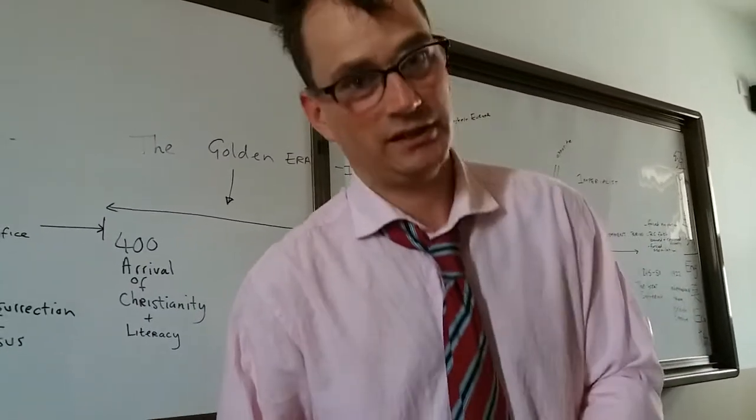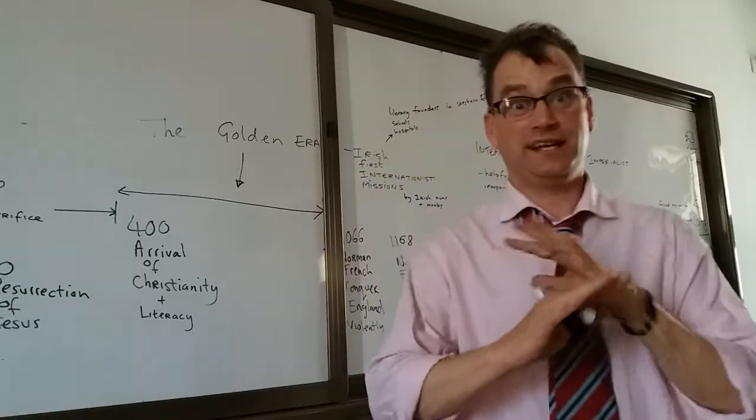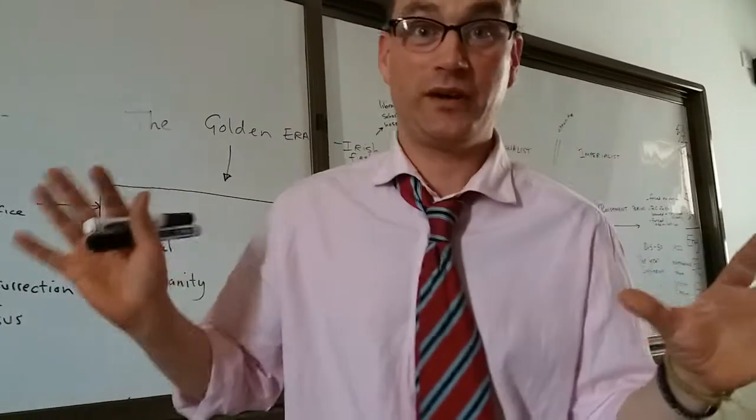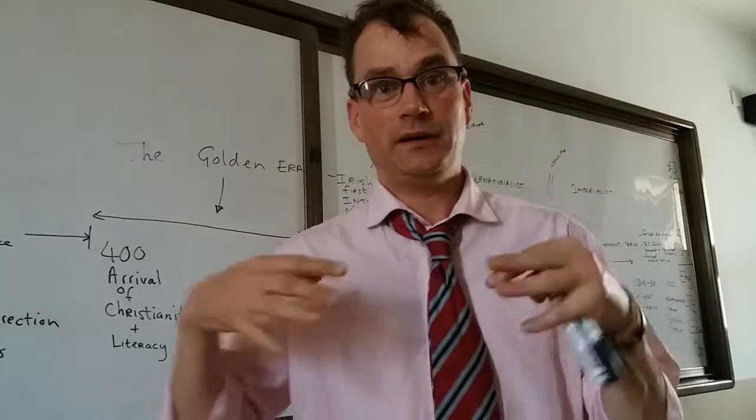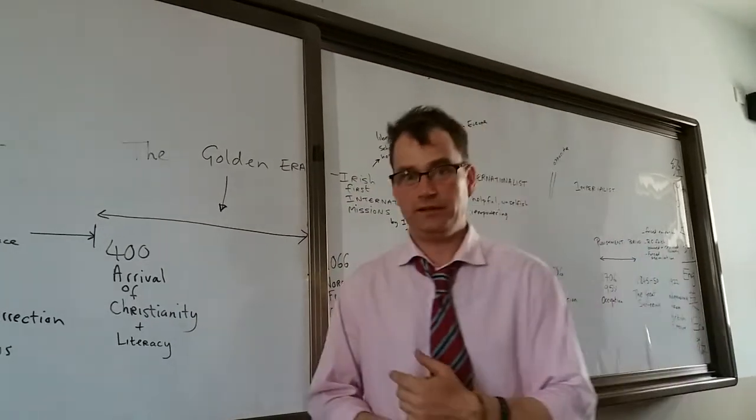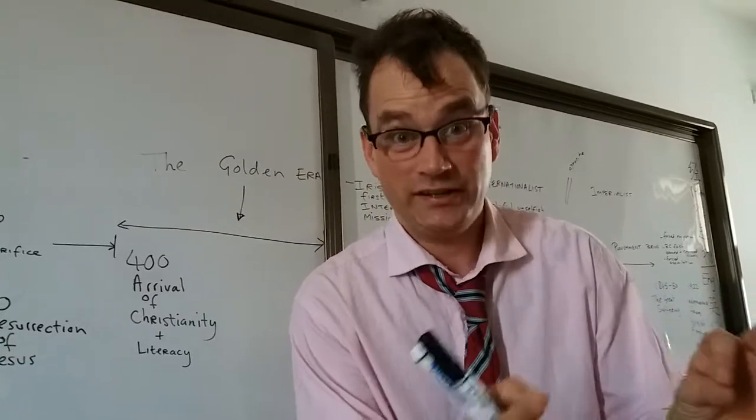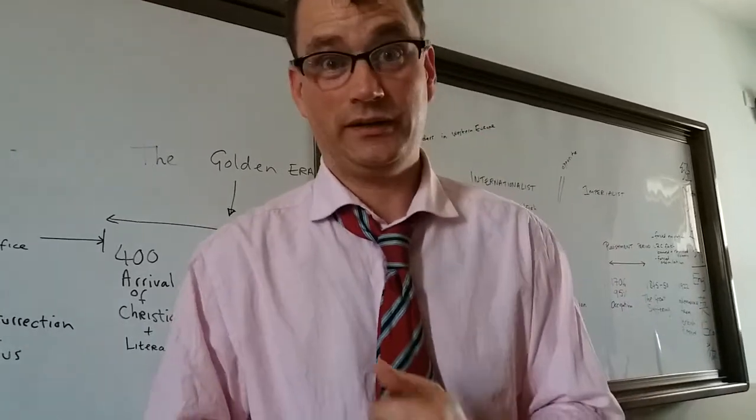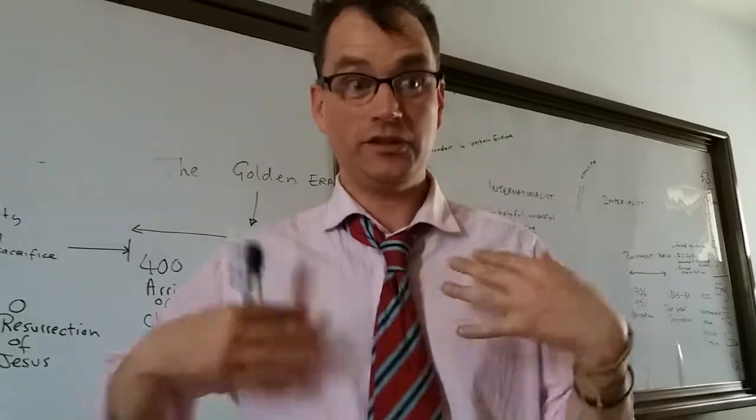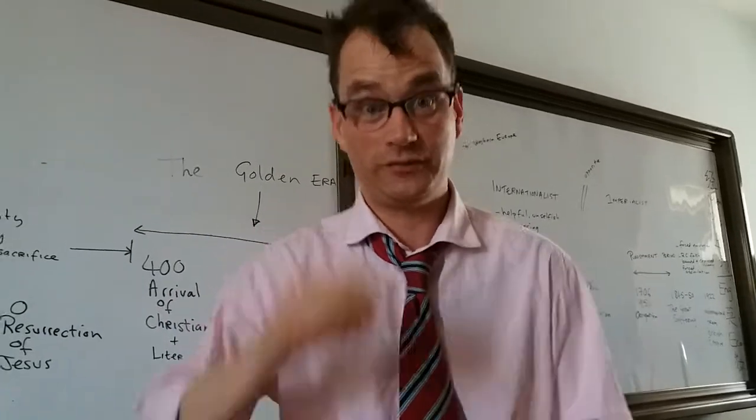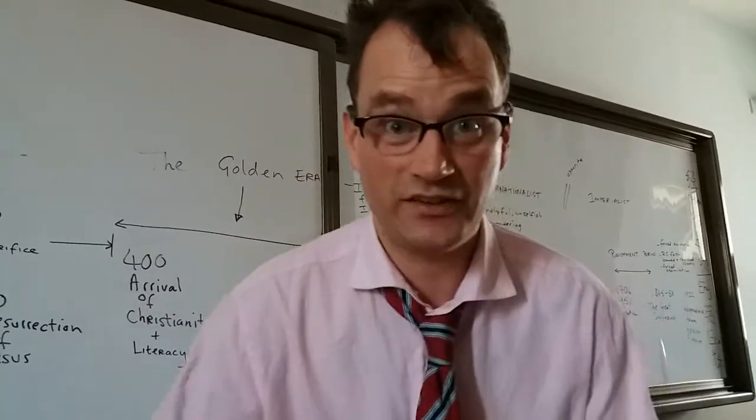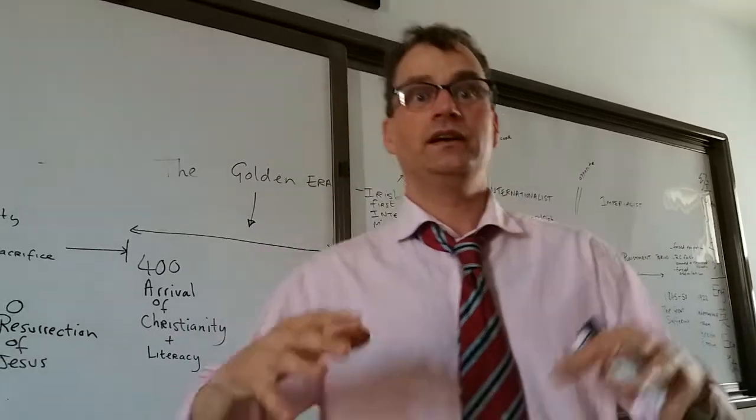And the French go to work on the English in a big way. They genocide the north of England. There's like 100,000 people get murdered by the French invading army. I mean, the French Celt's treatment of the English is an unwritten history. Even the English don't know about it. The harrowing of the north, they call it. And I've only just found out about it myself recently.